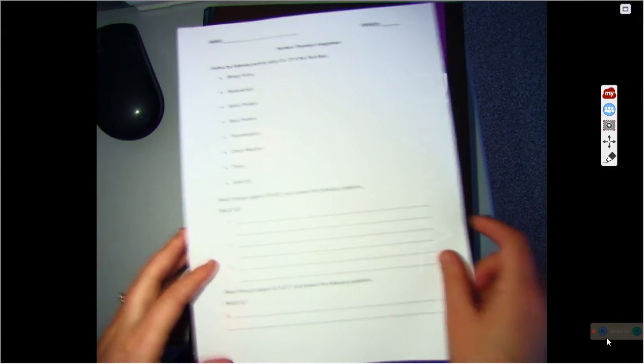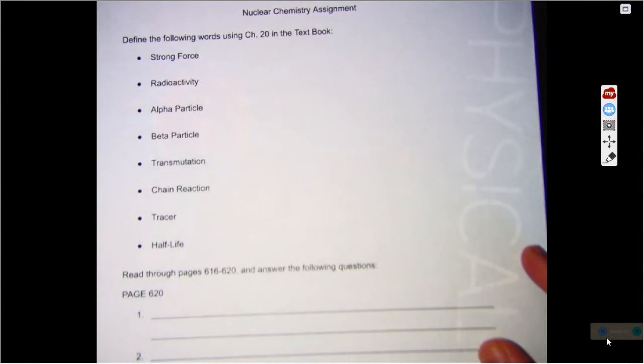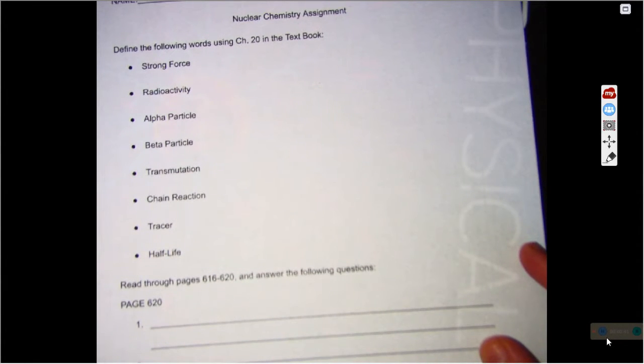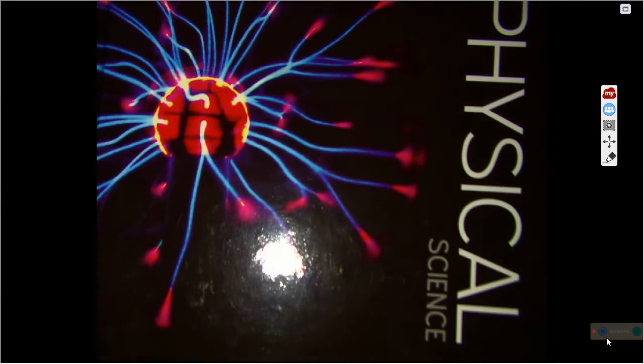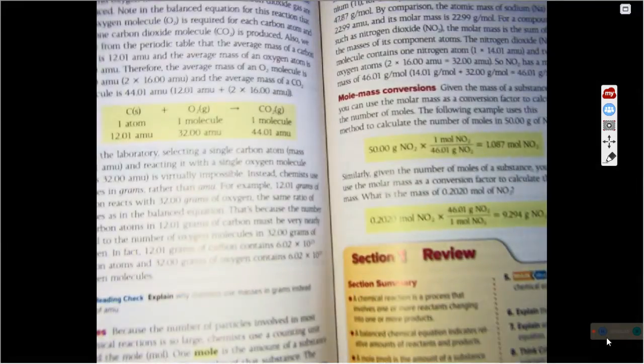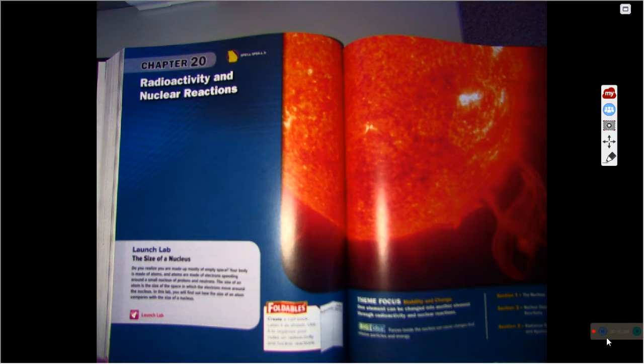So here's the sheet you're going to have in front of you. At the top what you'll notice is that we have some things we're going to define and it says define the following words using chapter 20. So the first thing you need to do is find chapter 20. So I'm going to find chapter 20 and it will look like this when you get to it.